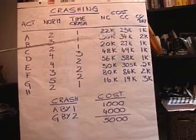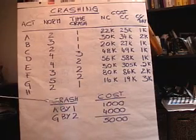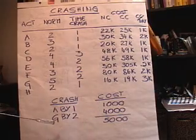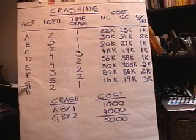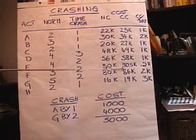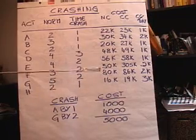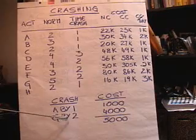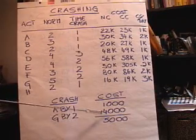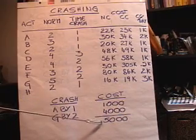Activity A is cheap at $1,000 per day, so let's crash A by one day. That gets us from 15 down to 14 at a cost of $1,000. But we want to get it down to 12, so let's crash G by two days at $2,000 per day. We can crash G by up to three days, but two is sufficient. We couldn't crash A anymore — that was already done. That's an extra $4,000, bringing the total additional cost to $5,000 to get from 15 down to 12.